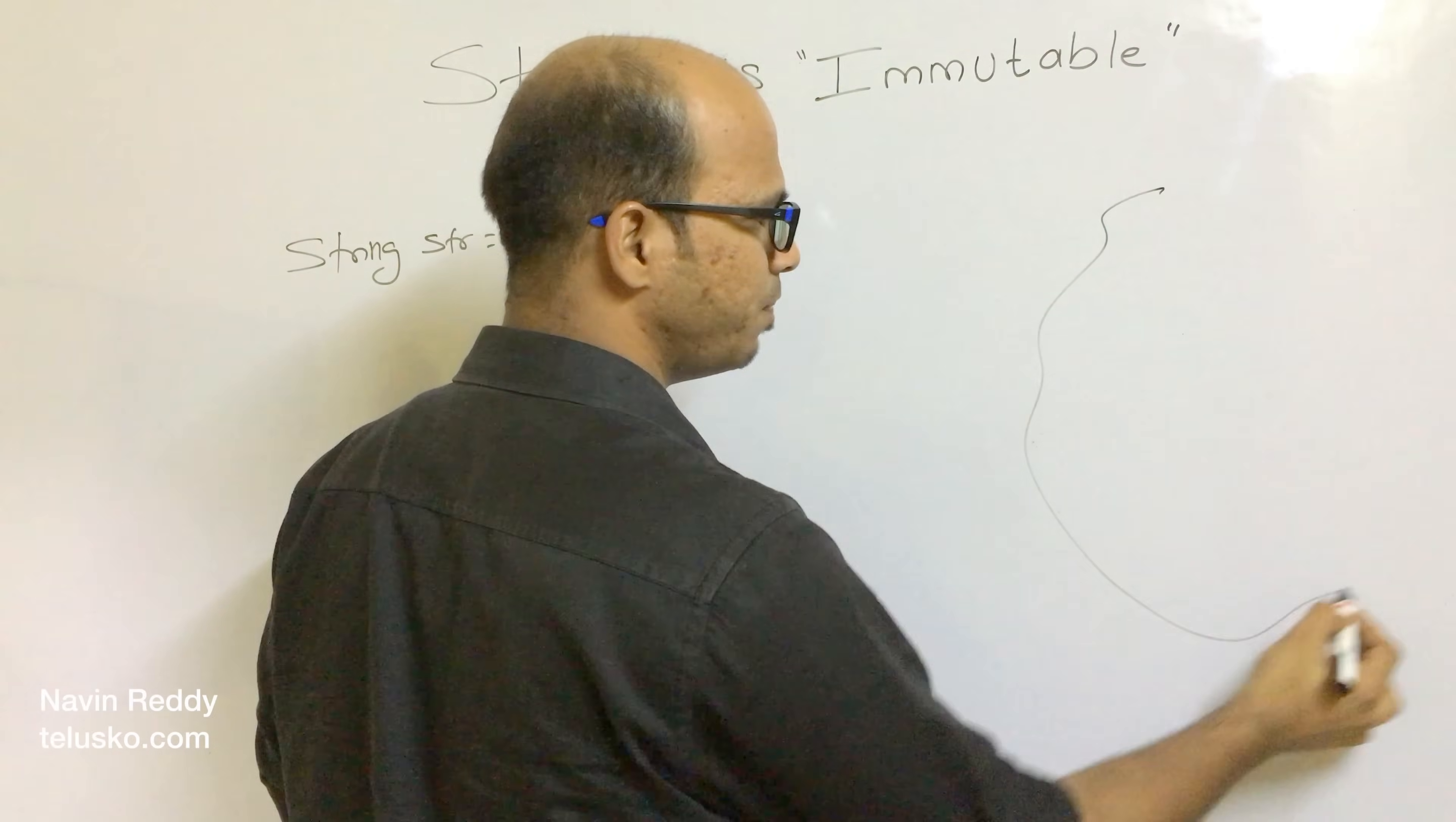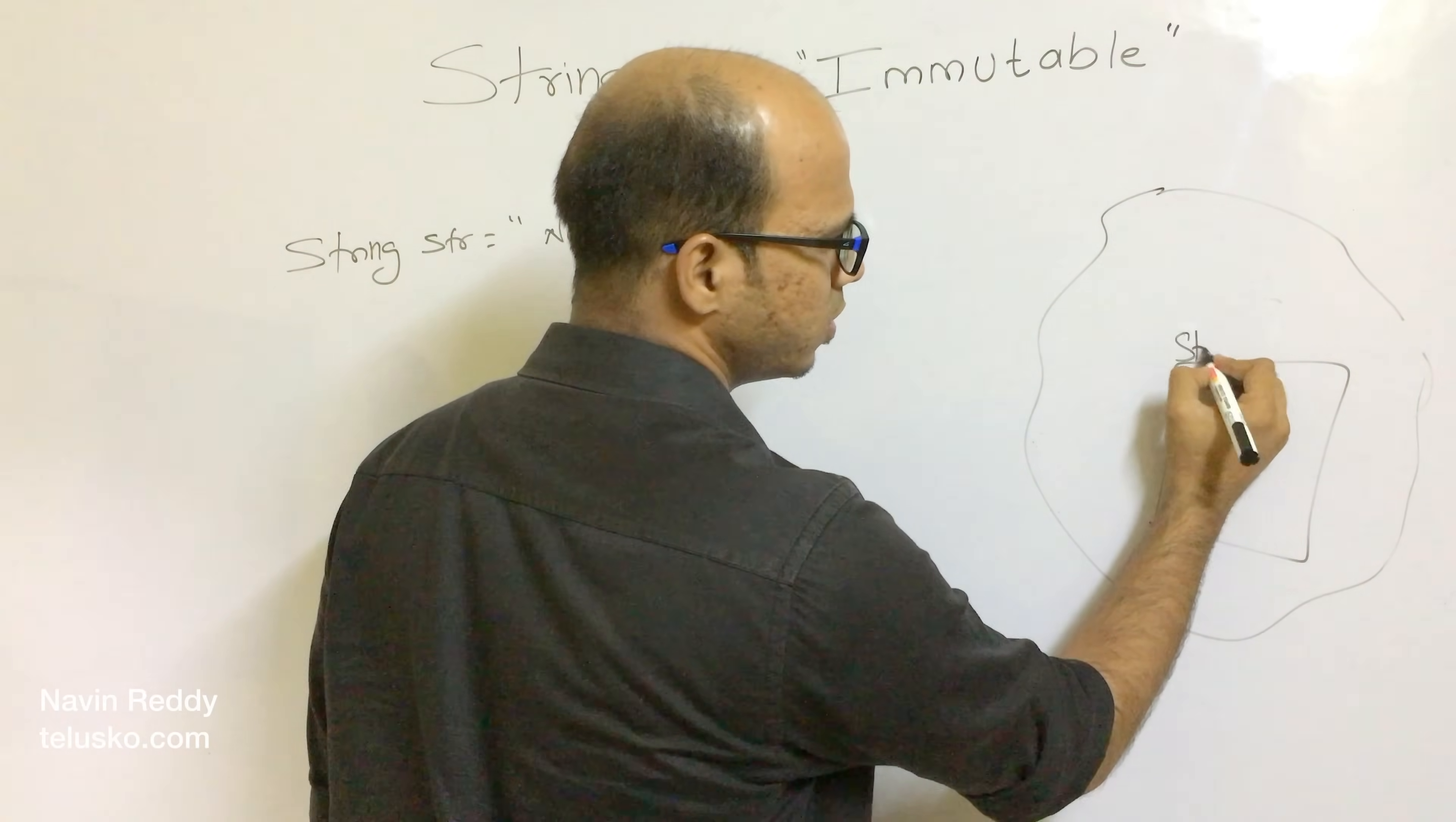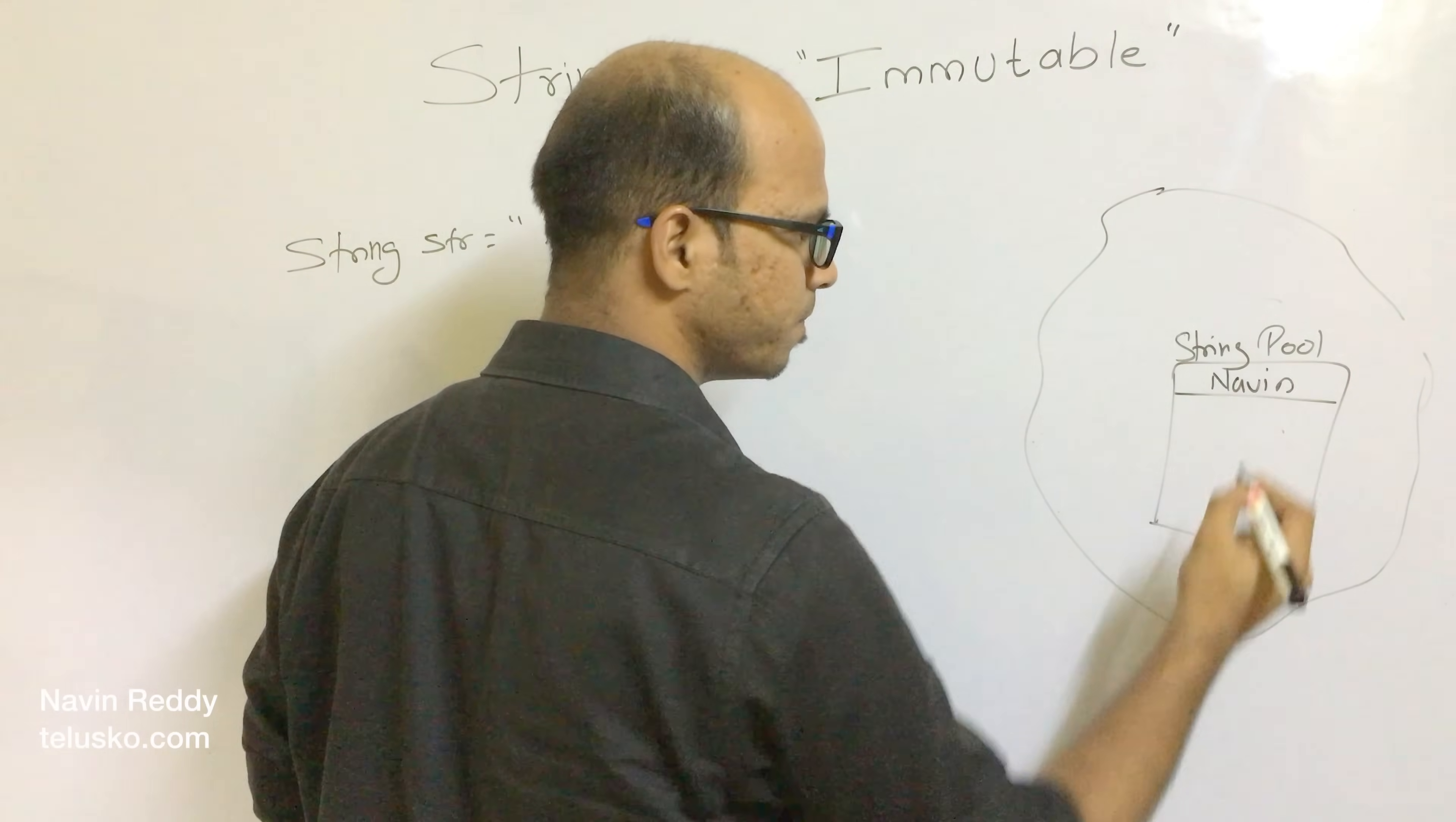Inside your heap memory, we have something called string pool. Let me take a big area. Inside your heap memory, you will have something called string pool. So if I say string STR equals Naveen, this will go inside the string pool and there will be a value called Naveen.